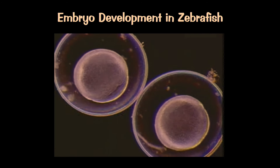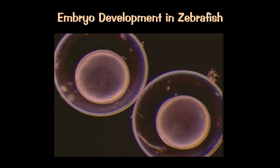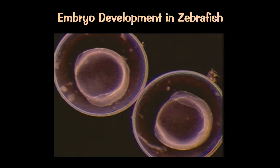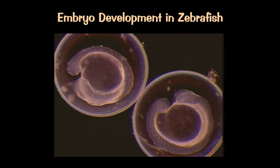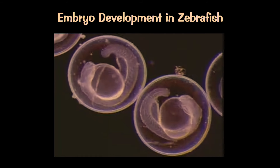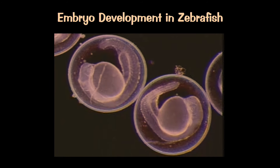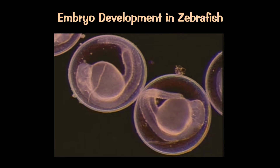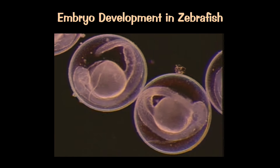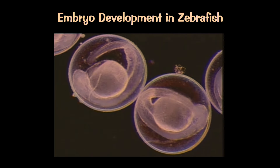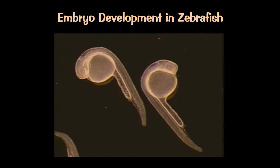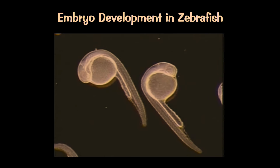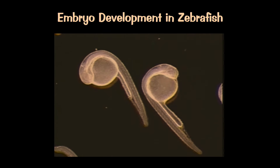One of the first things that forms is the vertebral column — the backbone — with the nerves inside it, because everything else branches off that. Pretty quickly you can see the fish starting to take form, with an eye visible if you look closely. That amount of development takes place just 21 hours after fertilization.